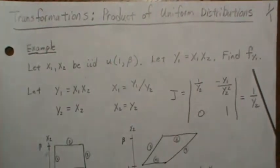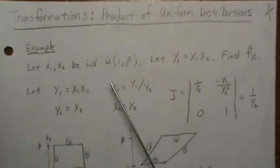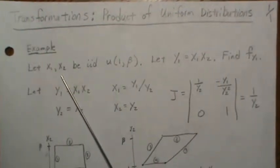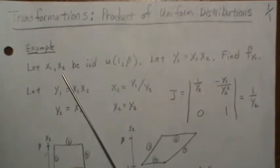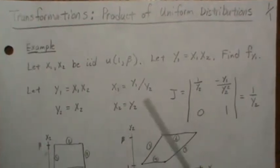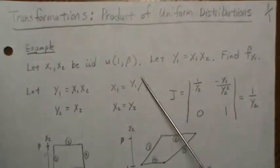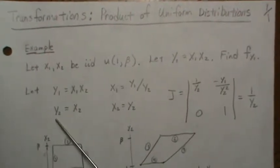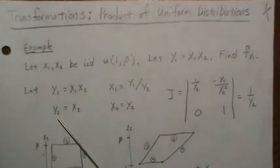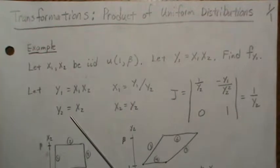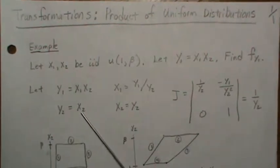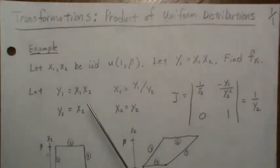Since we are transforming from two dimensions, x1 and x2, we need to use the change of variable technique. We need a map to R2 space, so we create a variable y2 that's easy to integrate out, and we just let it be x2.